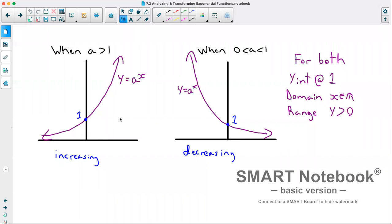For the domains of each case, our all real numbers for x, and our range would be y has to be greater than 0. Now, this will change once we start doing transformations.